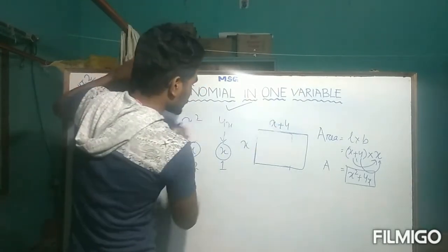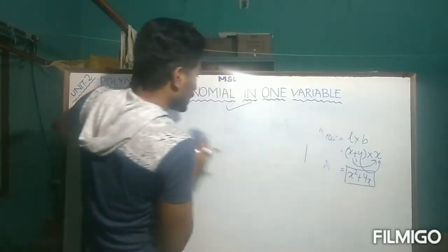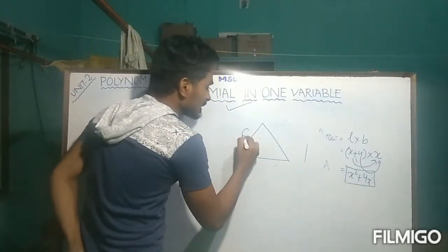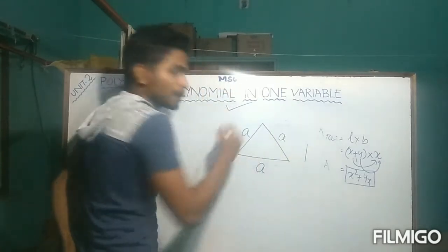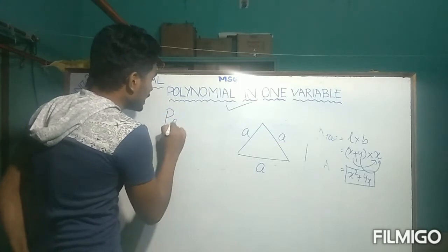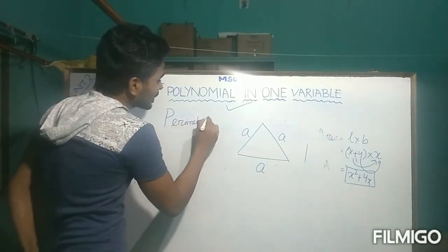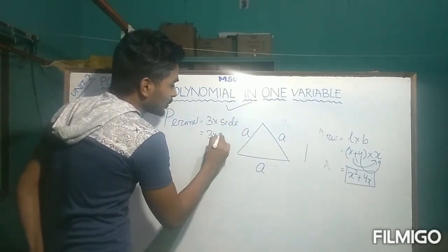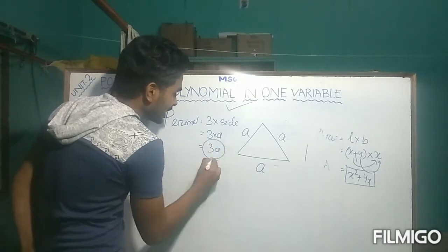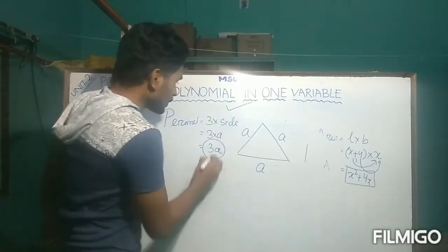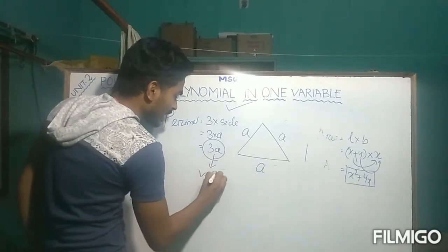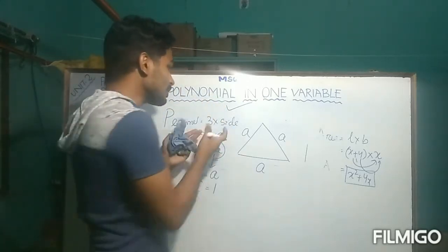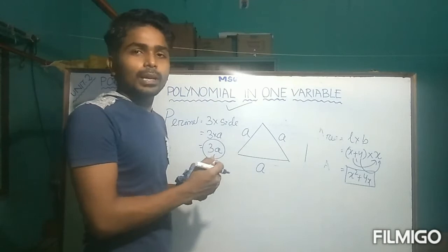Let us take one more example. Suppose we have an equilateral triangle where each side is A. What will be the perimeter of the equilateral triangle? It is 3 times the side, so it will be 3A. It is also an algebraic expression. In this expression, the variable is A and the exponent is 1. Since it contains only a single variable, it is also known as a polynomial in one variable.